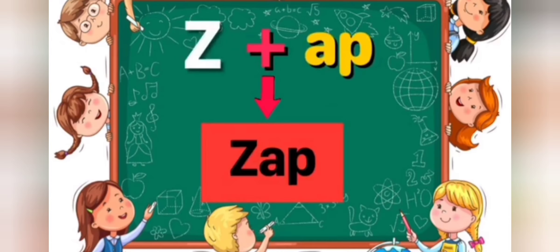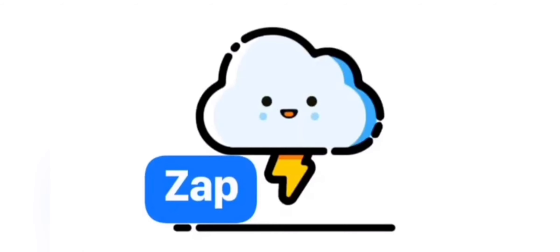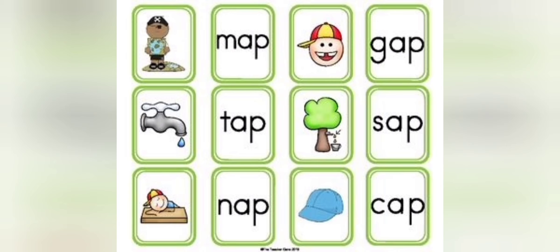Zap, zap, zap, zap. Map, tap, nap, gap, sap, cap - these are app sound words. Continue with me: map, tap, nap, gap, sap, cap.